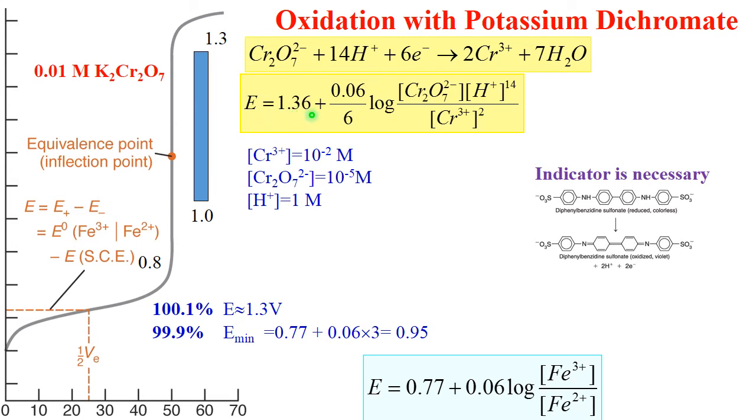Redox potential is very complex. You need to take into account 6 electrons, and write all the formula here. Now, if we'll do the same calculations as before, we can see that we can stop at any redox potential between 1 and 1.3.